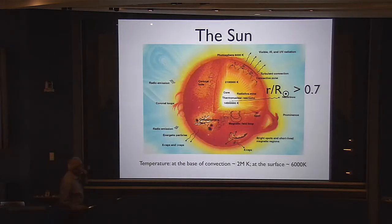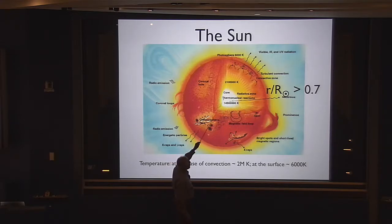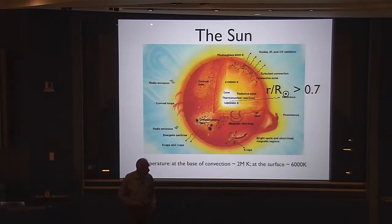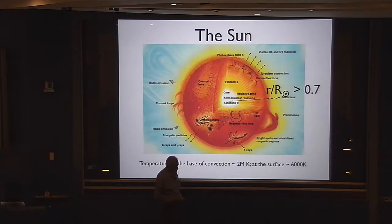The problem I want to talk about is here. This is the sun, and this internal region called the core is where energy is generated by proton-proton collision. You have hydrogen that gets converted to helium, and it also emits neutrinos and photons.